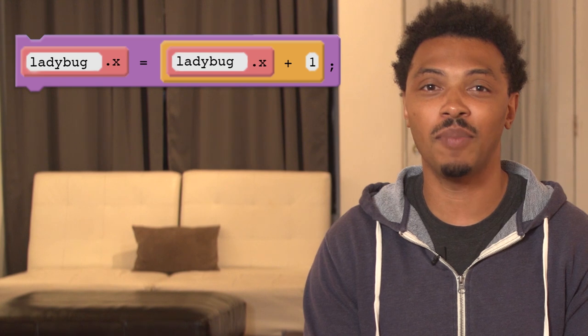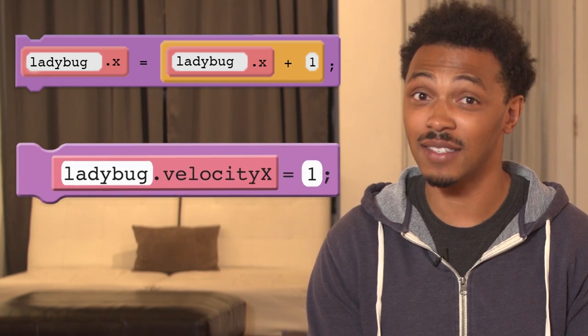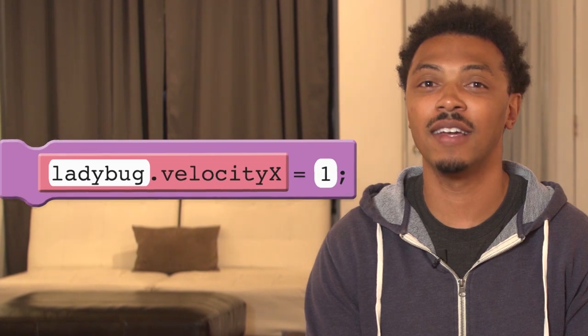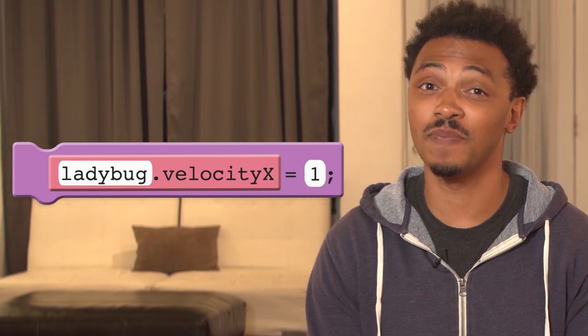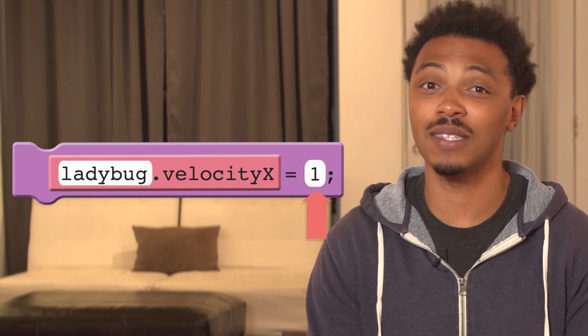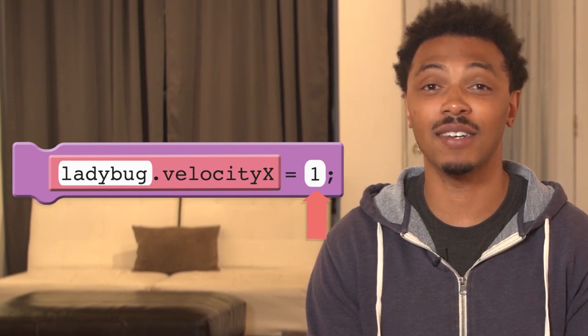In our example, that block is velocity X. The velocity X property hides the details of the counter pattern that changes the sprite's X position. Whatever number you assign to this property will automatically be added to your sprite's X position on the next tick of the draw loop.